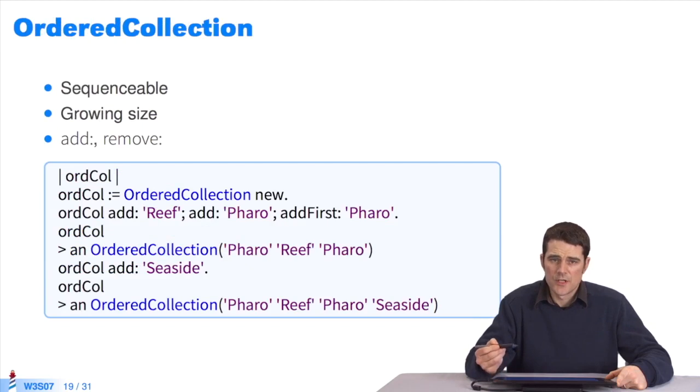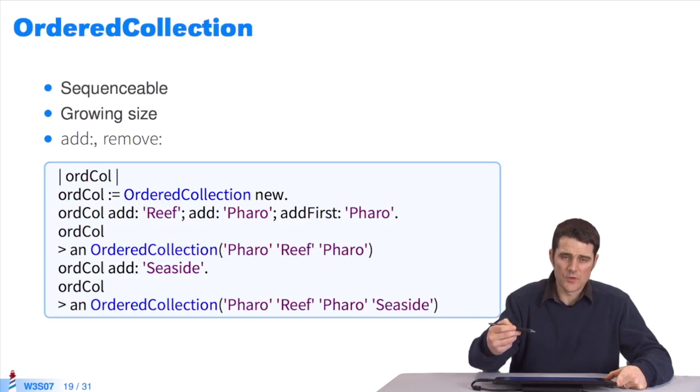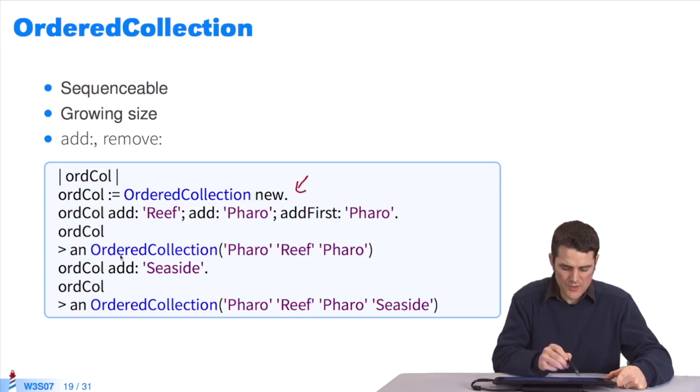The class OrderedCollection defines a specific collection which can be extended. Whenever you add elements, it grows. I instantiate OrderedCollection by sending the message NEW. I use the method ADD: to add new elements in this collection. I could use ADD:FIRST: to add an element at the beginning of the collection. By default, is at the end. You can see what the collection returns. It is composed of three elements: Pharo, Reef, Pharo. With ADD: Seaside, Seaside is added at the end.